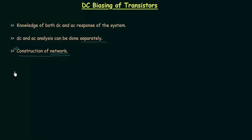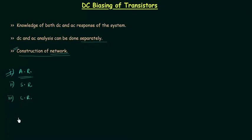We already know the three operating regions of a transistor: the active region, the saturation region, and the cutoff region. To use a transistor as an amplifier, the transistor must be biased in the active region. We need to apply external DC voltages so that the operating point remains in the active region throughout our analysis. In this chapter we will use an NPN common emitter transistor.